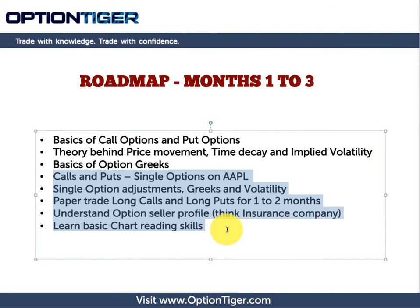In course two, we get into the actual calls and puts. We look at real Apple options, and everything you studied in theory in the first course, you're going to see it exactly like that on the platform. There are some things like option Greeks and volatility that are slightly more advanced concepts to learn, but if you don't learn them, your option strategies or your trades will never be right.